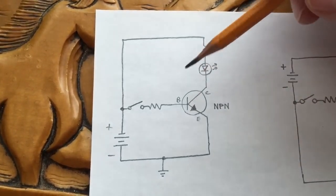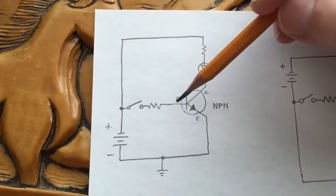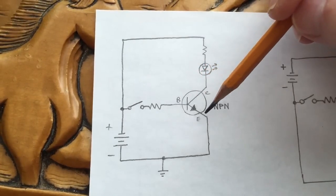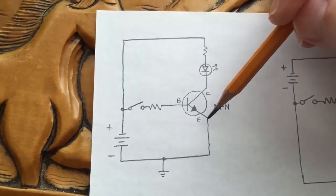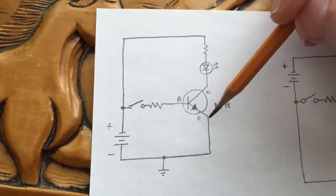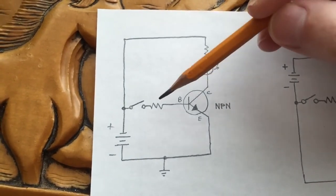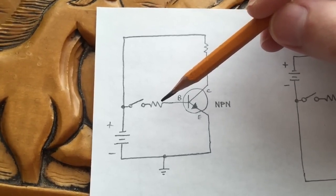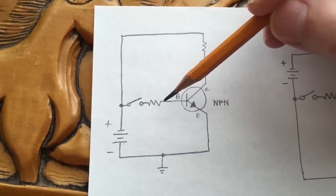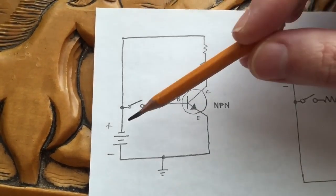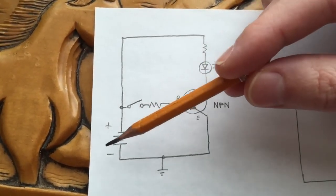In an NPN transistor, current flows typically from the base to the emitter in a switching configuration. In conventional current flow, current flows from positive to negative. Here we have a battery or voltage source, with the positive terminal up top.